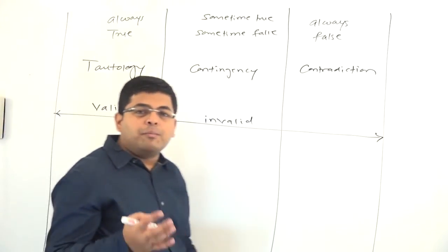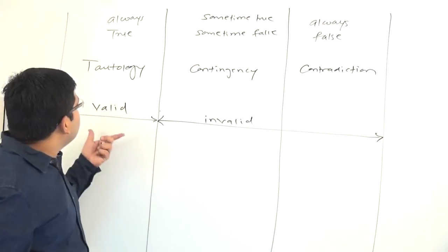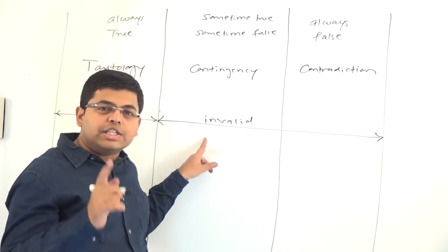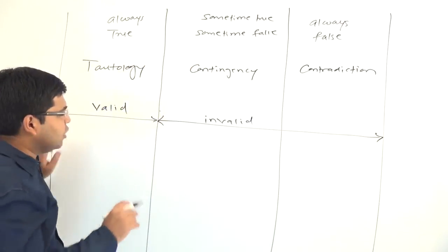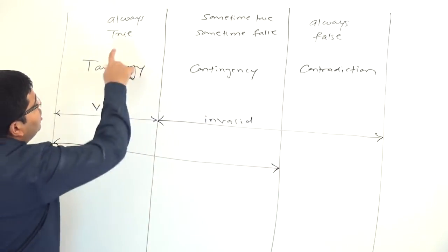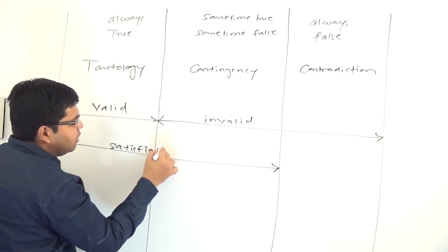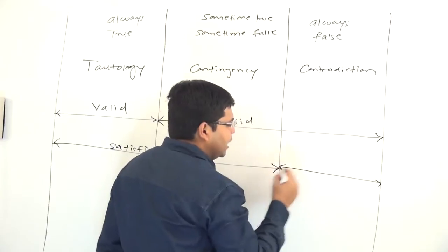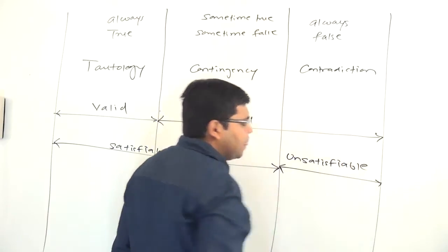A formula which can be made true is called a satisfiable formula. Tautologies are always true and contingencies are true at least once, so both can be satisfied. Therefore, tautologies and contingencies together are called satisfiable. Contradictions can never be made true, and that is why they are called unsatisfiable formulae.